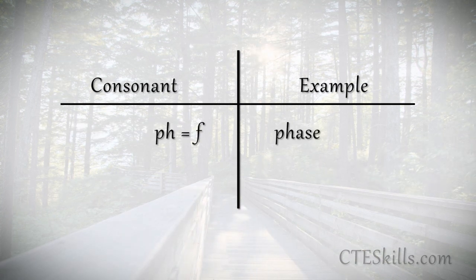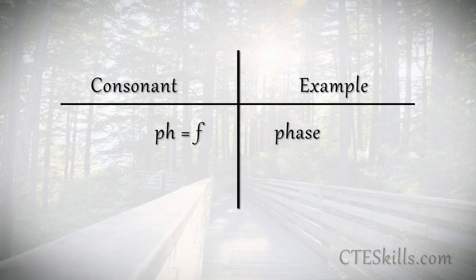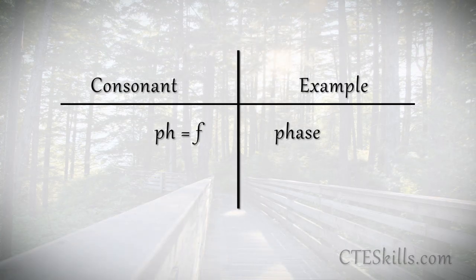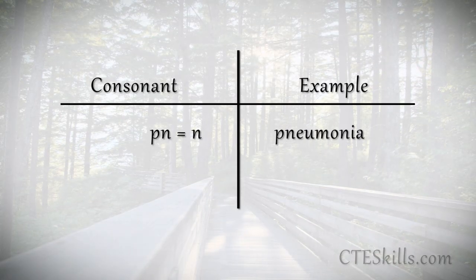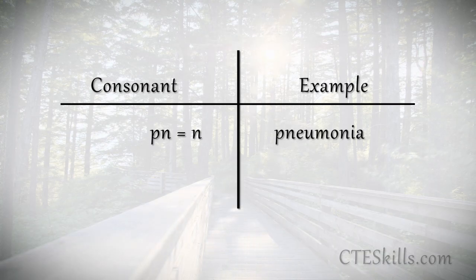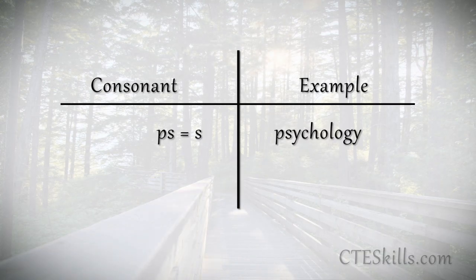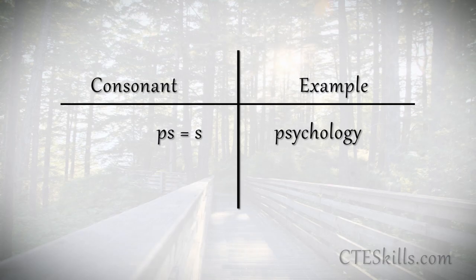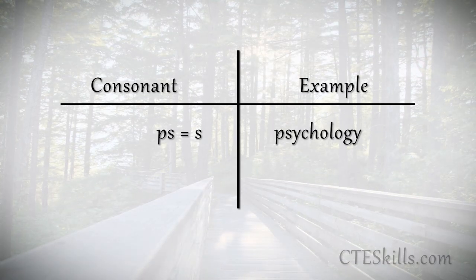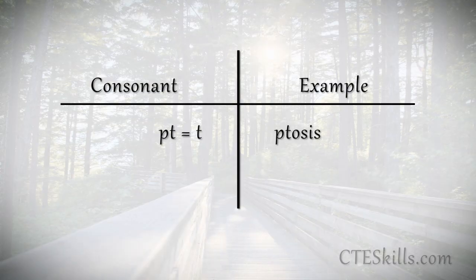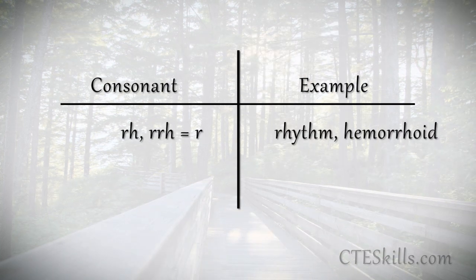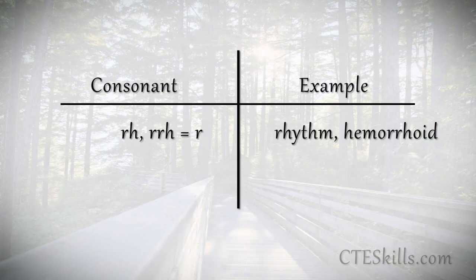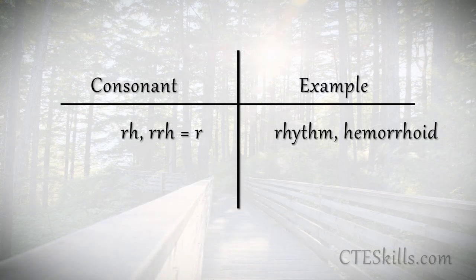The PH combination equals F, as in phase. PN sounds like N, as in pneumonia. PS equals S, as in psychology. The PT combination equals the T sound, as in ptosis. RH or RRH will produce the R sound, such as rhythm or hemorrhoid.